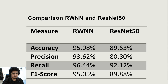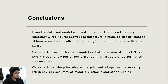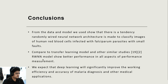This indicates that RWNN is better for classification of human red blood cells infected with falciparum parasites compared to the transfer learning model. In conclusion, the data and model we used show that the randomly wired neural network architecture tends to classify images of human red blood cells infected with falciparum parasites with small errors. Compared to transfer learning models and other similar studies, the RWNN model shows better performance in all aspects of performance measurement. We also expect that deep learning will significantly improve working efficiency and accuracy of malaria diagnosis and other medical applications. Thank you.